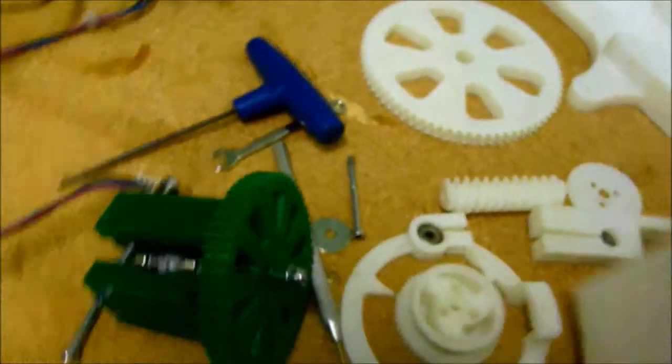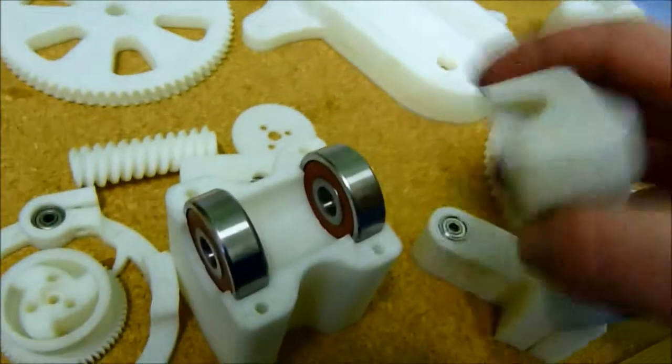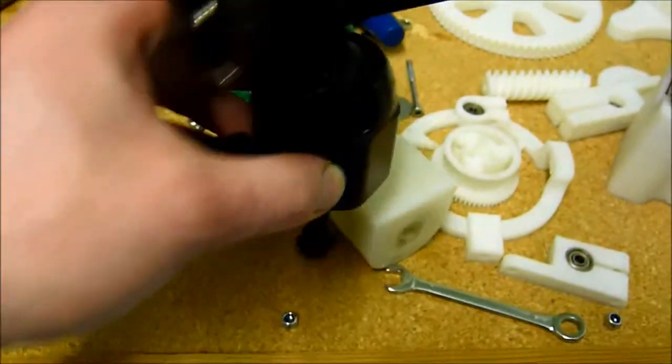And that's turning the shaft that goes through this rather nice bearing housing. It's got two bearings in there, and this is to hold a tripod mount.